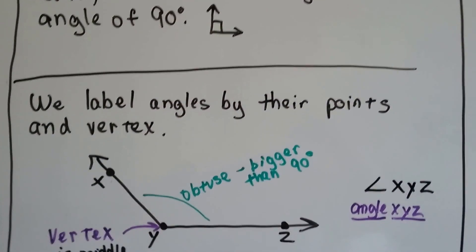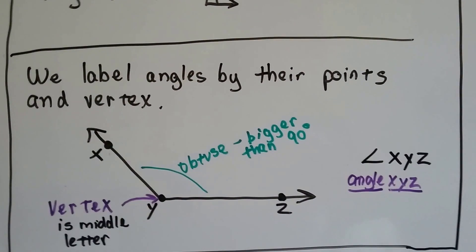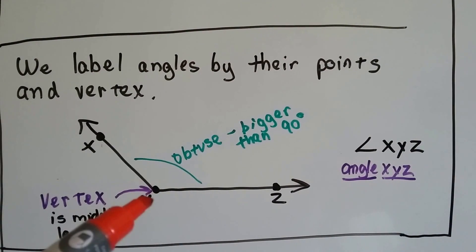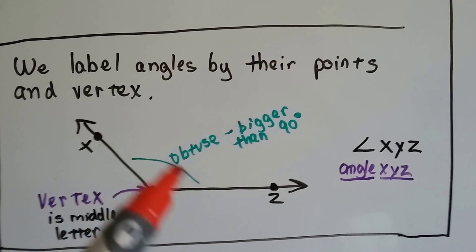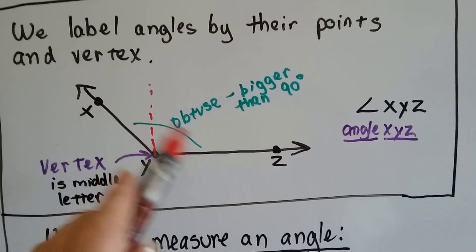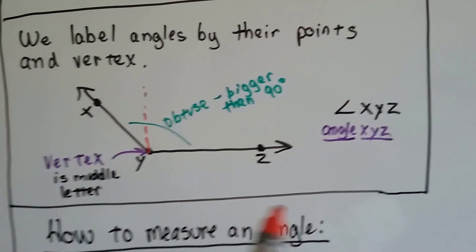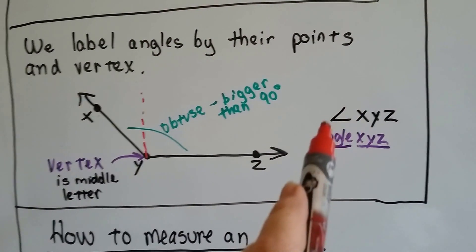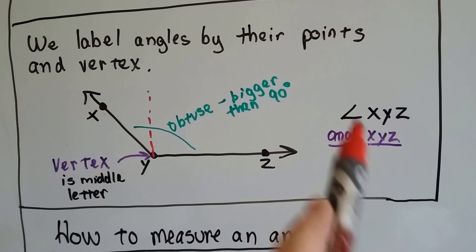We label angles by their points and vertex. This is X, Y, Z. The middle letter is always the vertex. And this angle is obtuse because it's bigger than 90 degrees. You can see 90 degrees would have been there. And it's bigger than that. So, it's obtuse. And we write it with this little symbol for an angle that says angle X, Y, Z. Okay?